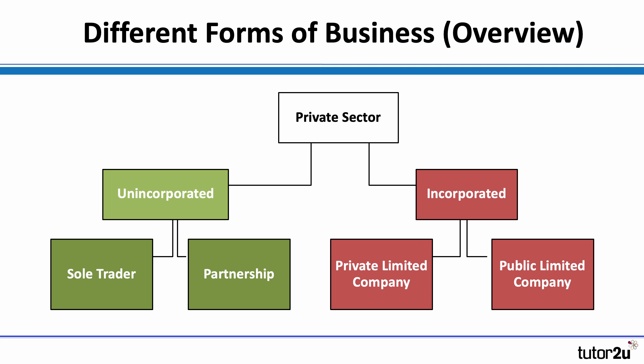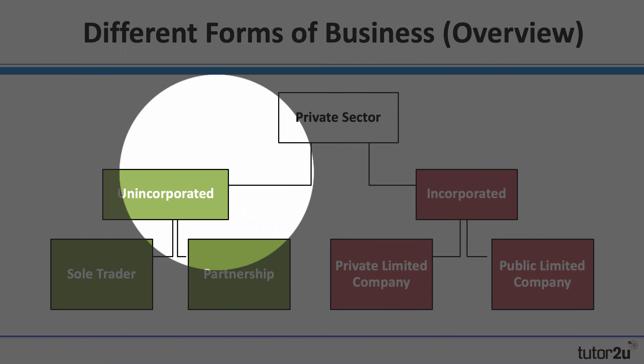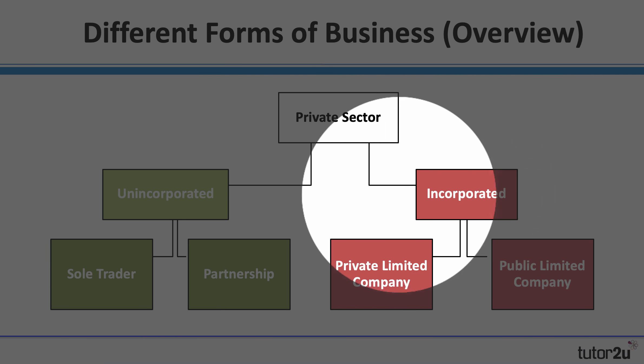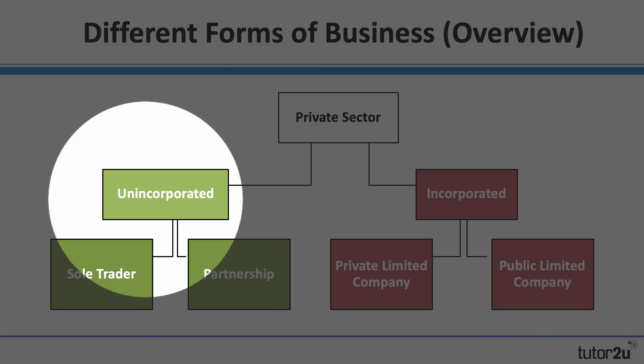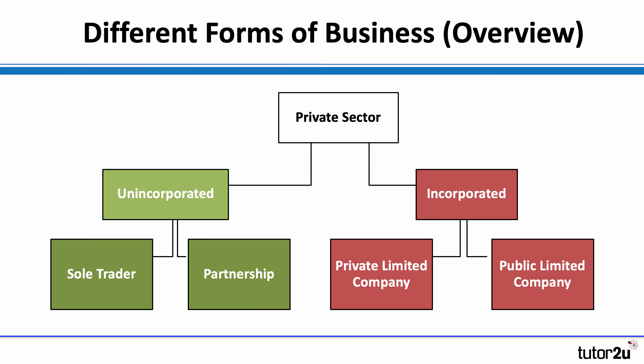In a separate video, we look at the difference between private sector and public sector. But for now, the first thing to remember is that there is a difference between what are known as unincorporated businesses and incorporated businesses. The two main types of unincorporated business are sole traders and partnerships — AQA students, you don't need to know about partnerships. Incorporated businesses are private limited companies and public limited companies, though we're not going to look at public limited companies in this video.